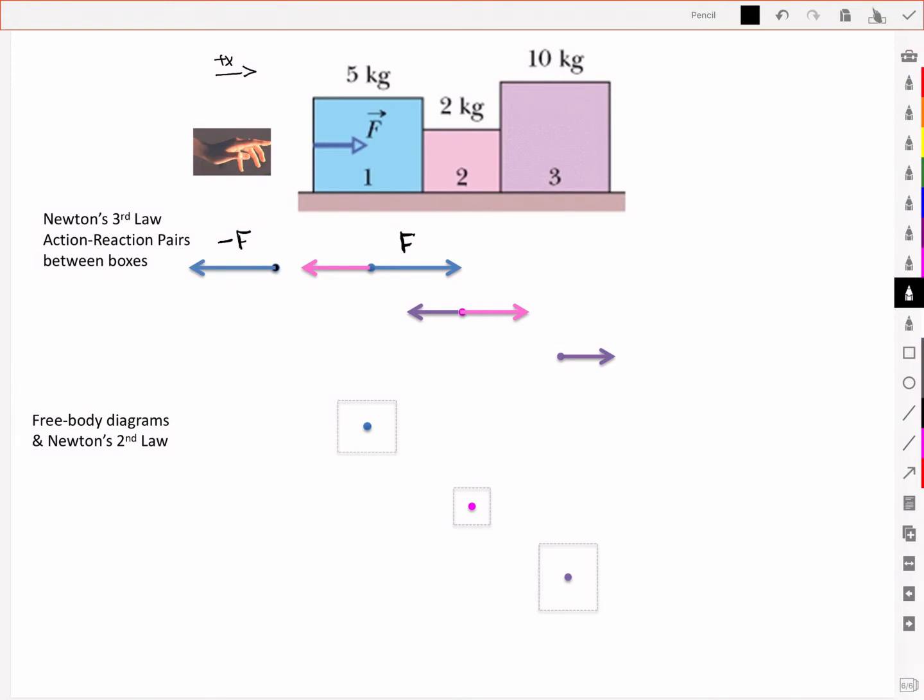And so box number one then exerts a force on box number two. So the force on box number two by box number one is F21. But it will exert then a reaction force on box number one. So it exerts a reaction force on box number one, I'll call it F12, that is in the opposite direction but equal in magnitude to F21.